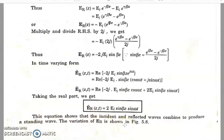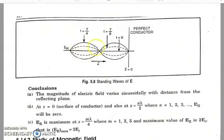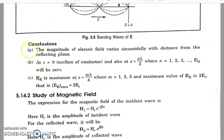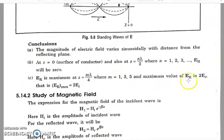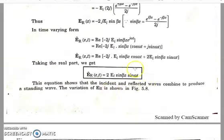The variation of Er is shown in the figure. It is called a standing wave because the wave does not move — the incident wave and the reflected wave combine and appear stationary. The conclusions are: the magnitude of the electric field varies sinusoidally with distance from the reflecting plane. At z = 0 or z = nλ/2, where n = 1, 2, 3, …, the field is zero. The maximum value of Er is 2Ei, occurring when the sine term equals unity.